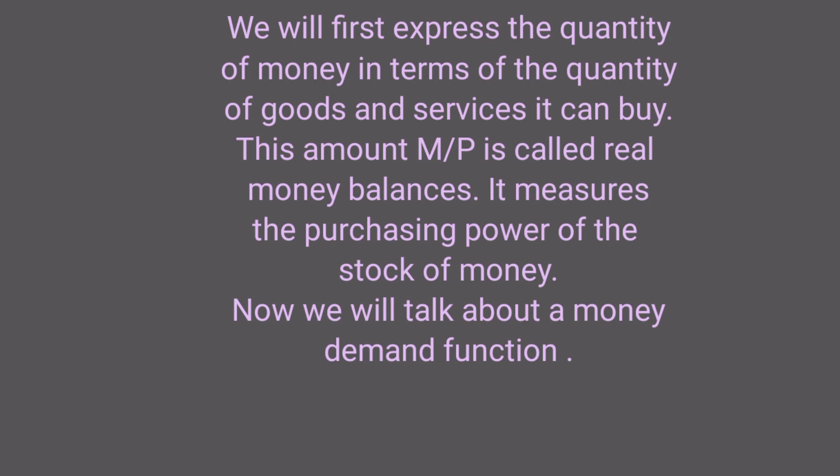In order to explain this model, we will first express the quantity of money in terms of the quantity of goods and services it can buy. This amount M by P, where M is nominal money supply and P is the general price level, is called real money balances. For example, if the nominal money stock is 100 and the general price level is 2, the purchasing power of the money supply is 50 units. We will use a money demand function to derive Fisher's quantity theory of money.